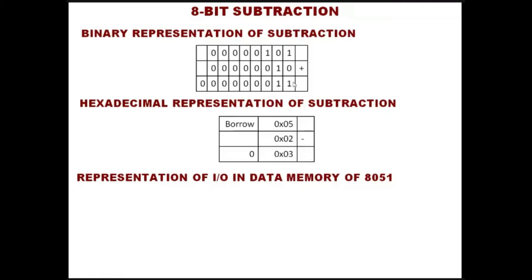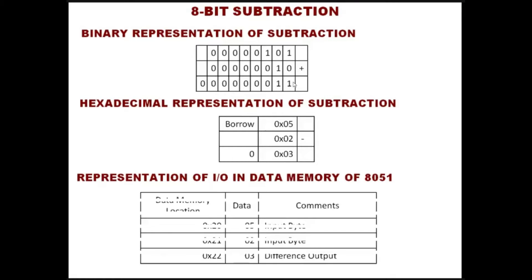Our interest is to store these numbers in corresponding memory locations. The 20th memory location stores 5, the 21st memory location stores 2, and the subtraction result 5 minus 2 equals 3 is stored as the difference output in the 22nd memory location. This is our interest in doing subtraction with respect to the 8051 microcontroller.